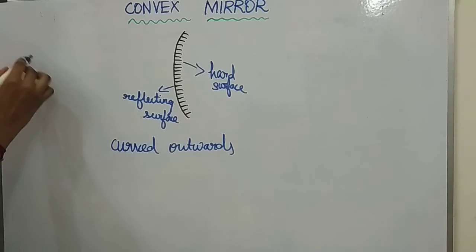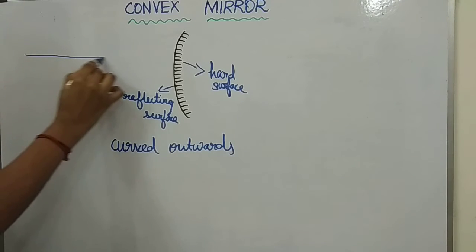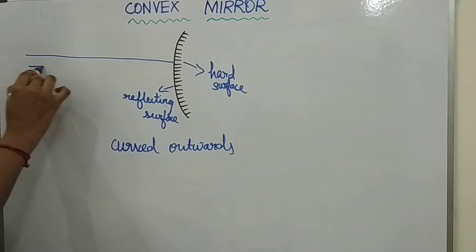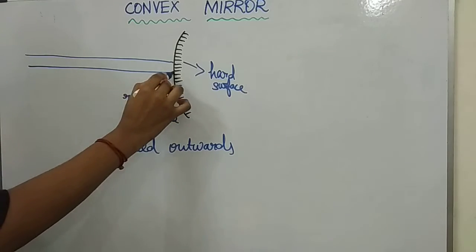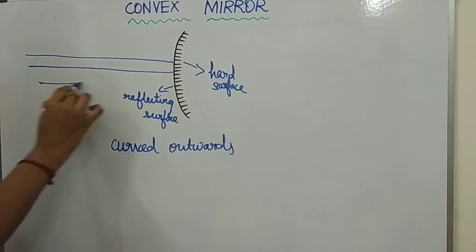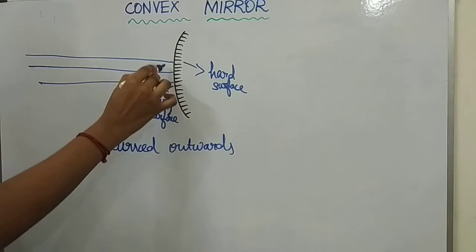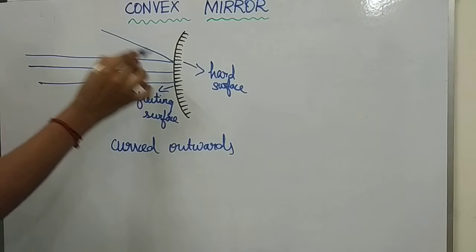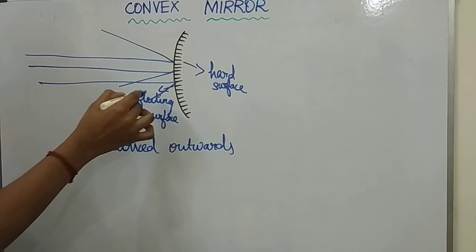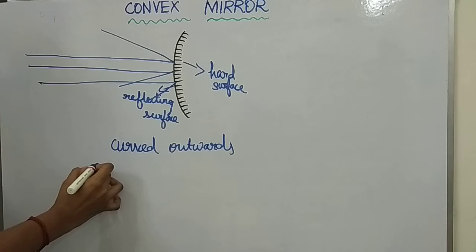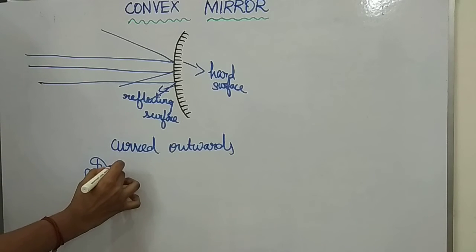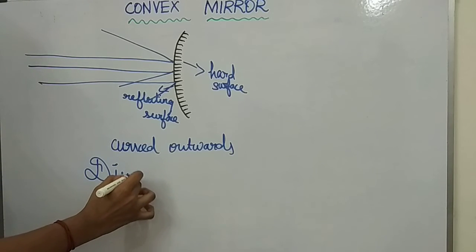When the ray of light passes through this convex mirror, after reflection it diverges the light. Therefore, it is called a diverging mirror.